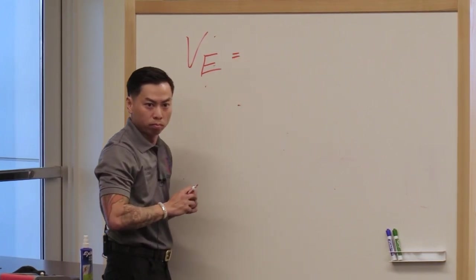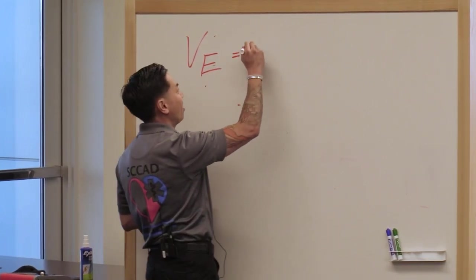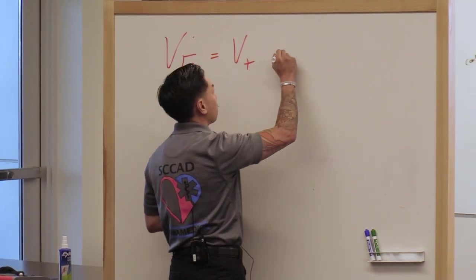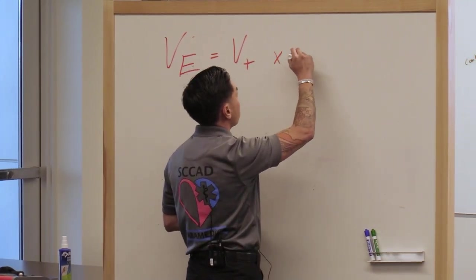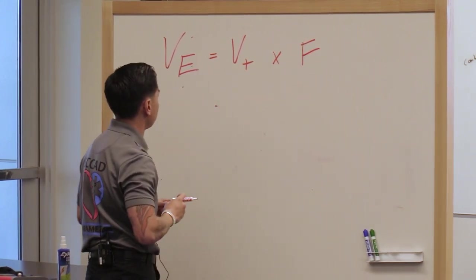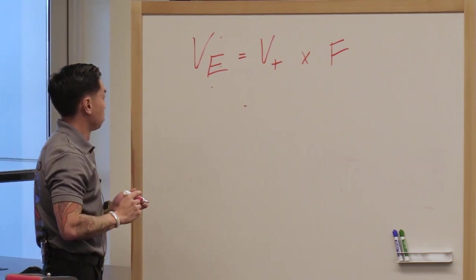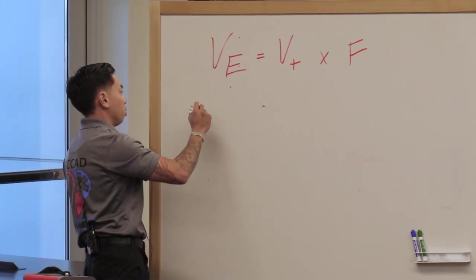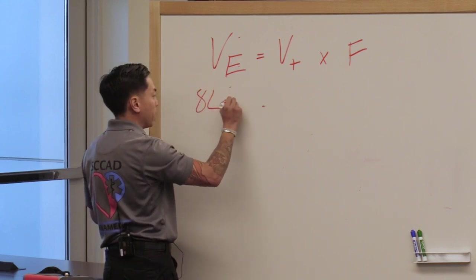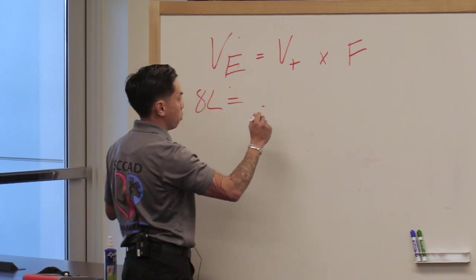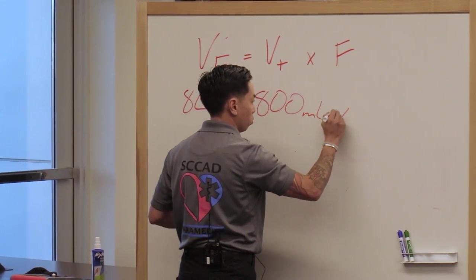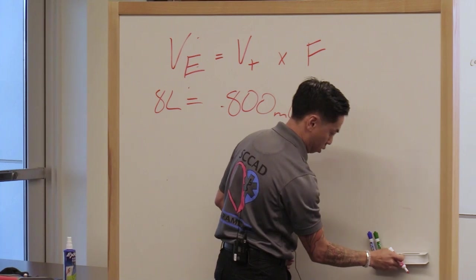For the sake of argument, as you get DKA, septic, anything like that that requires you to buffer the acidosis, the number goes up to like 9 to 11 liters a minute. So what is minute volume? And for whatever reason, in respiratory therapy, everything's just backwards. We'll actually say frequency of breathing. And I'll tell you why that's important here in a minute.